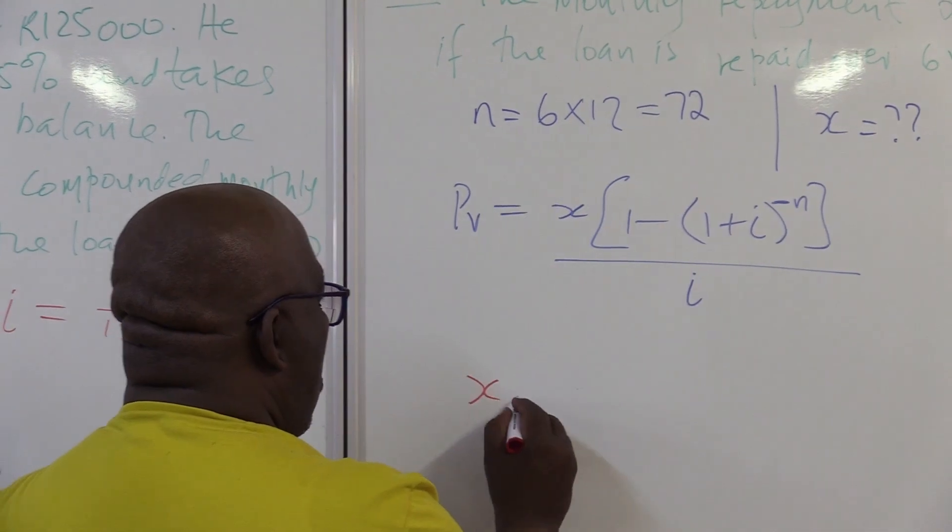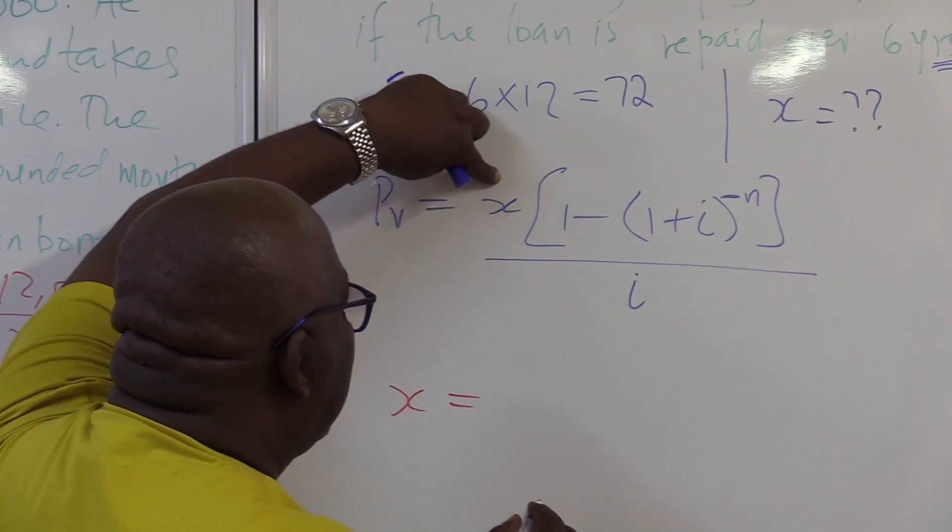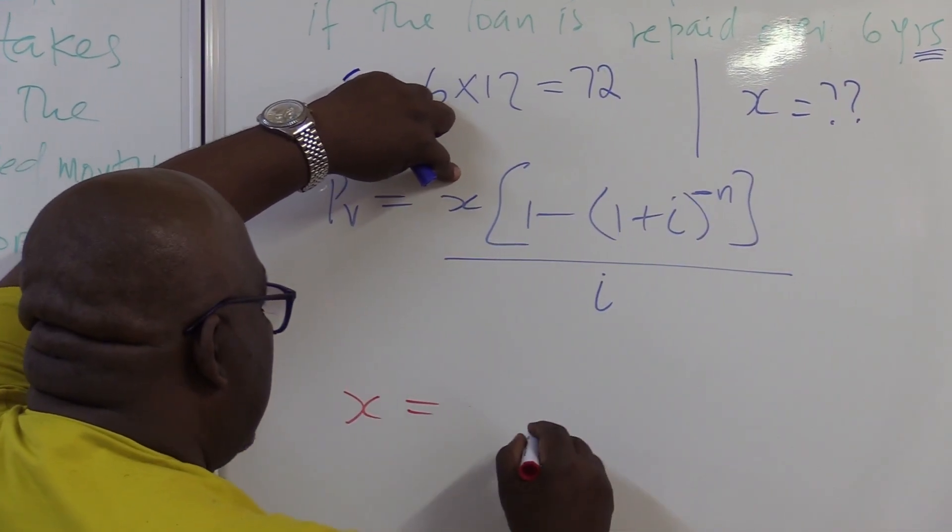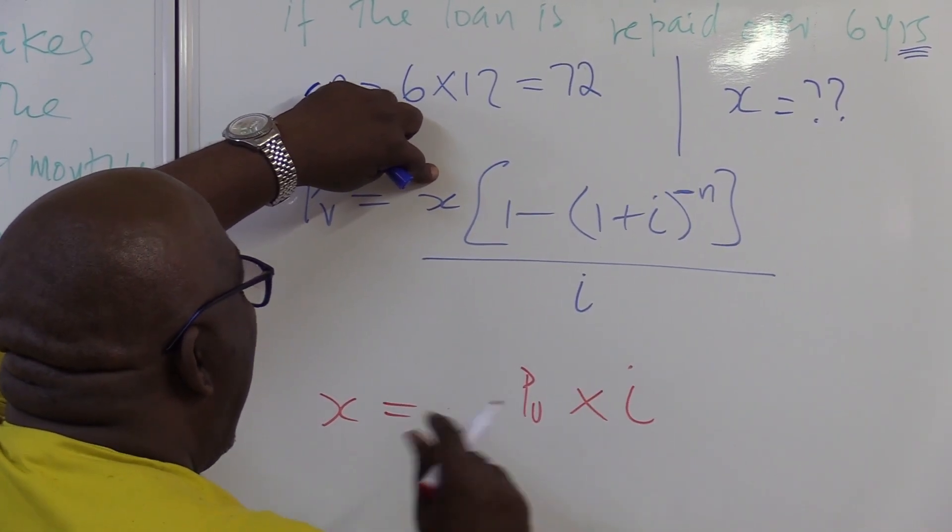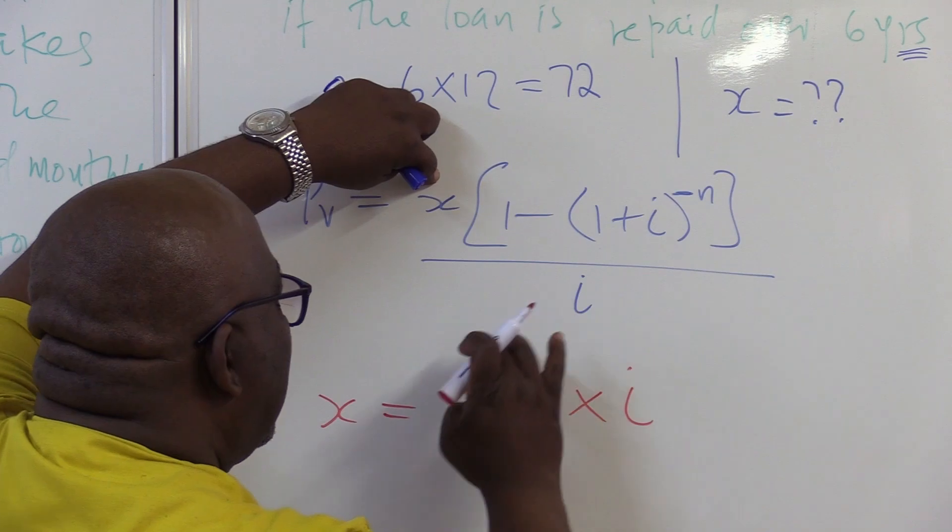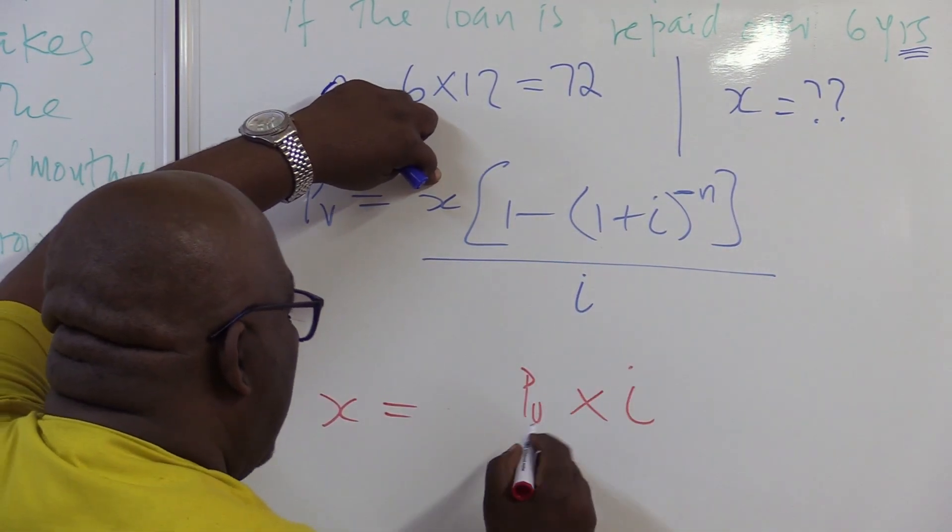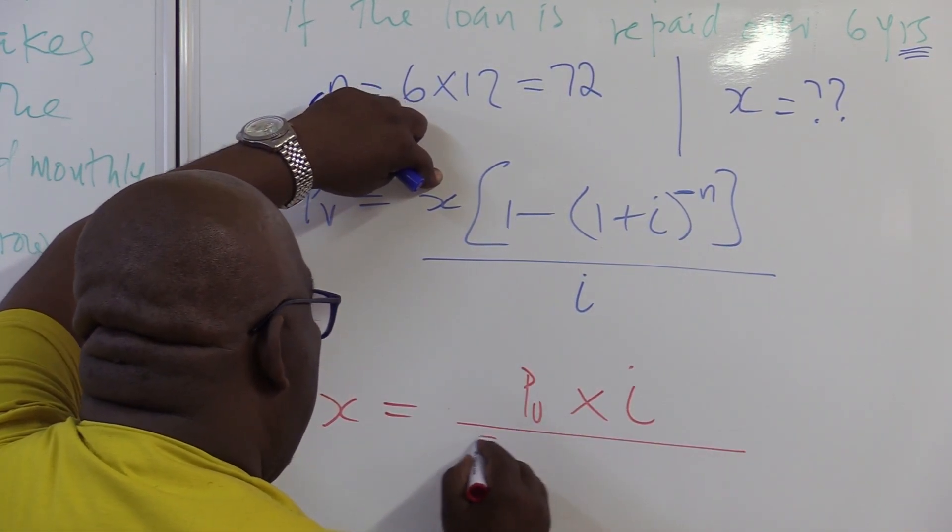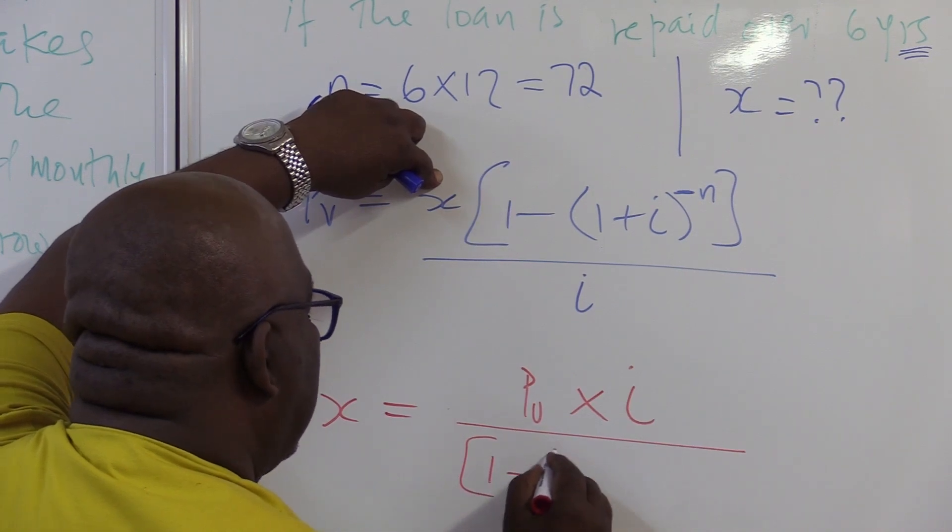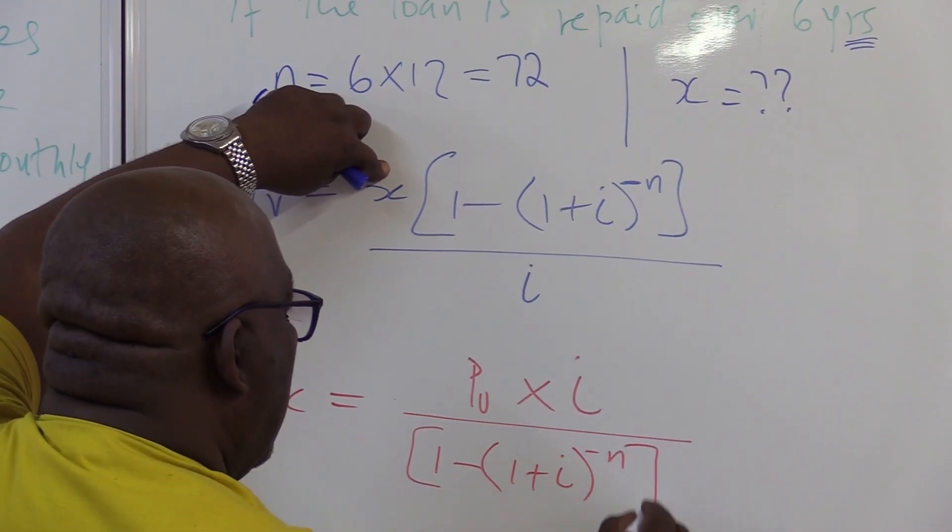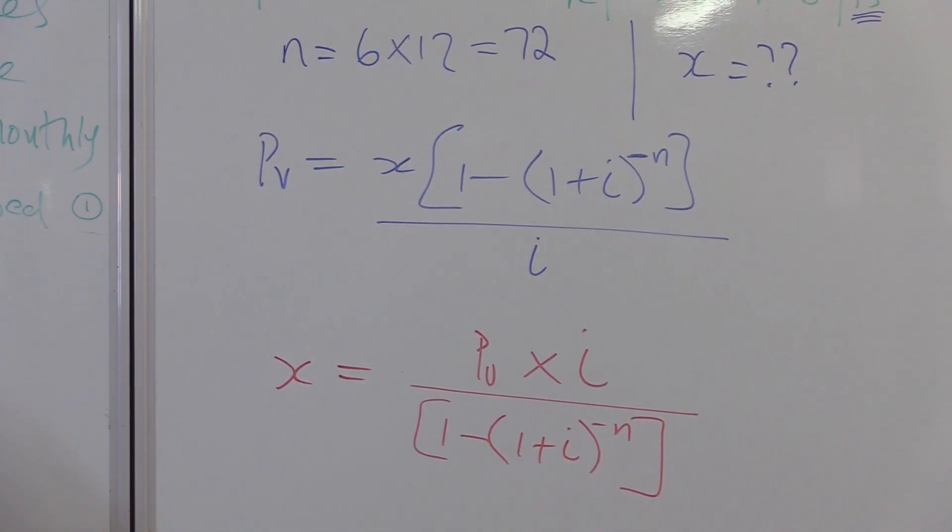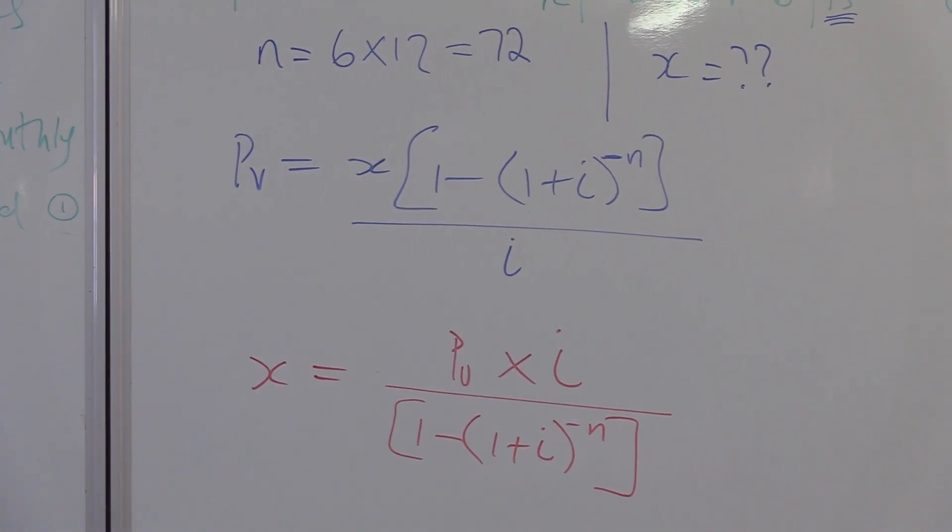So, the X would be equals to, I'm leaving X this side. I've got to multiply this by that. So, it's going to be PV times I. How do I get rid of this? Divide by it on both sides. So, I'm going to be dividing by 1 minus into 1 plus I raised to the power minus N. You've closed this bracket. This is the formula to calculate the value of X. We can create it.